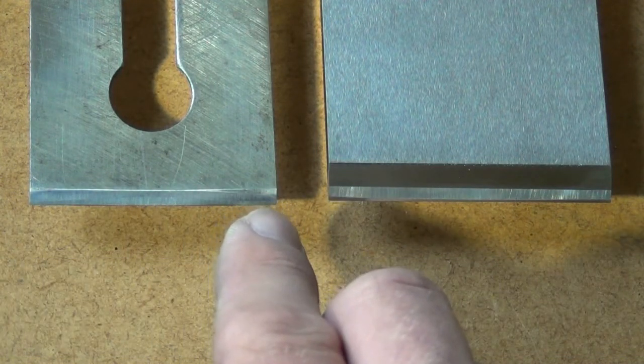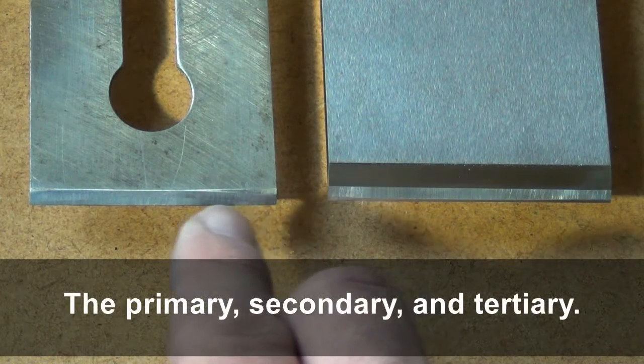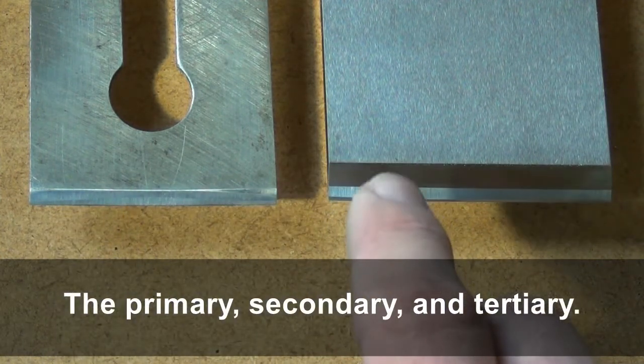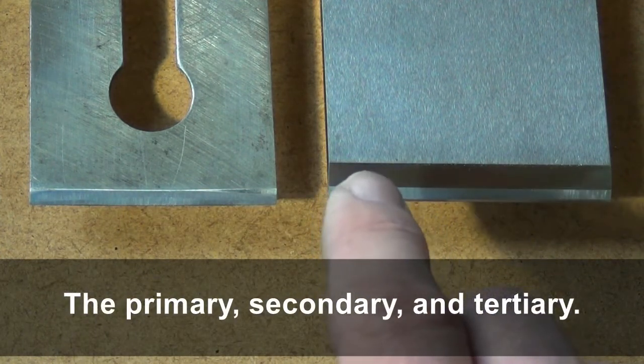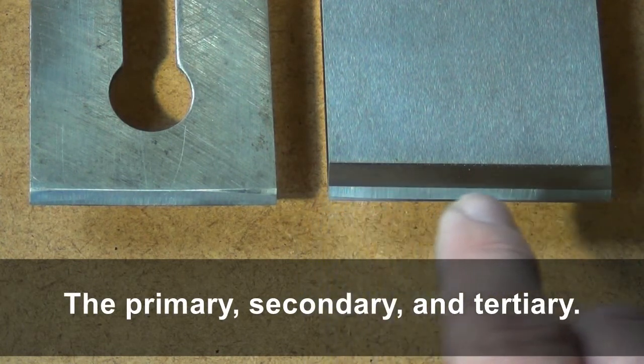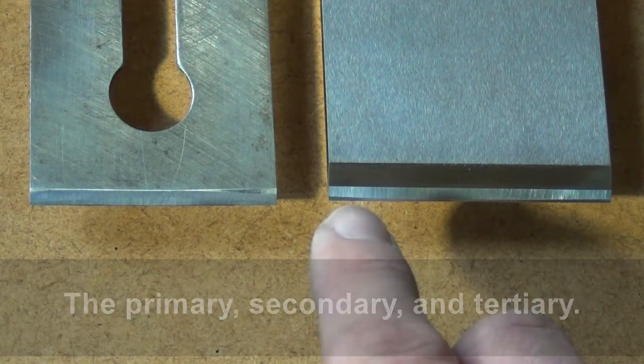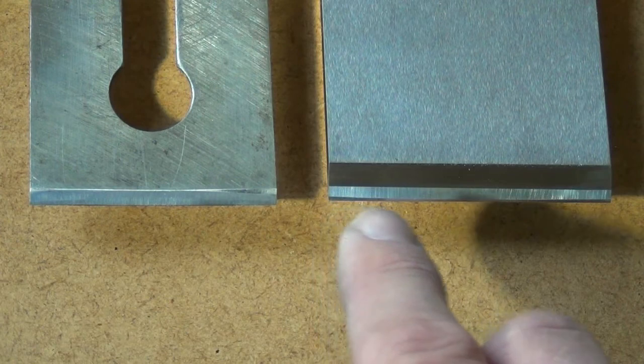Coming down a bit further, you can see another line across. It's clearer on this Lie-Nielsen: a primary bevel, a secondary bevel, and then right on the edge, the tertiary bevel.